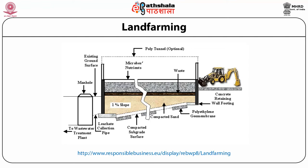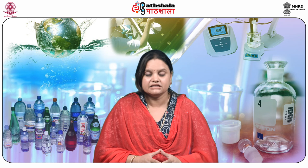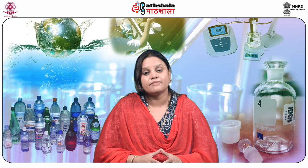This picture shows land farming. The polytunnel where microbes, nutrients, and waste are transferred is shown, along with the portion where the soil is bioremediated. A concrete retaining wall footing is developed so this soil does not contaminate adjacent soil. The ground level is compacted using sand or a polyethylene geomembrane. When wastewater is applied, it flows to a main hole and is transferred to the wastewater treatment plant. In land farming, microbe nutrients and waste are mixed with the soil particles so they degrade pollutants — particularly benzene, toluene, and xylene — from the soil.